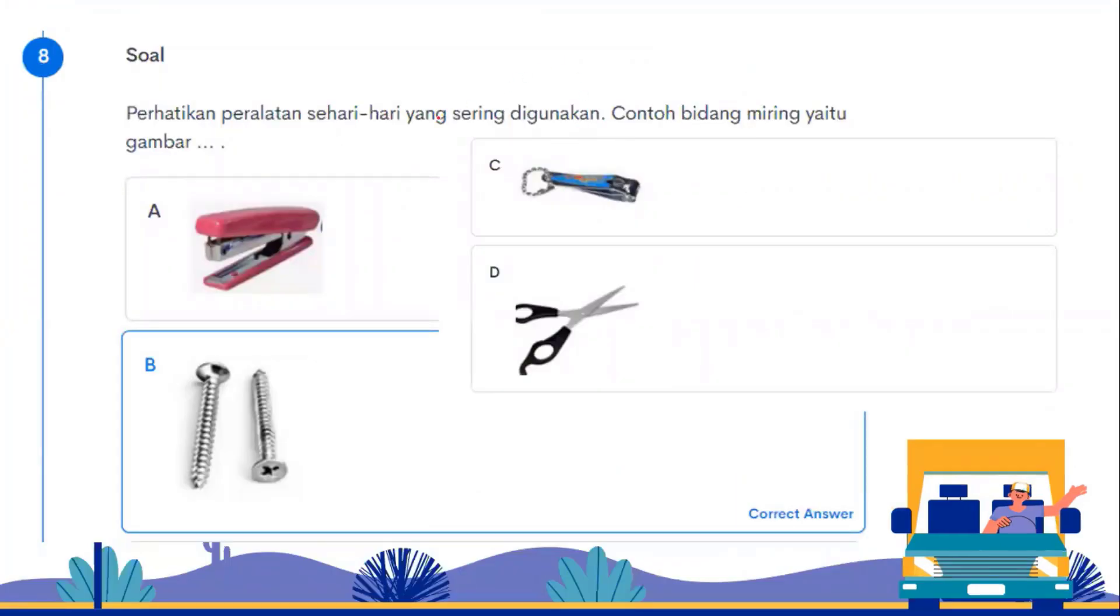Problem number 8 is conceptual. Pay attention to the following equipment that we often use in daily life. Inclined plane. This is a lever. This is also a lever. This one is also a lever. A lever is characterized by having a fulcrum point. Like scissors, the fulcrum is here. Then the fulcrum is here. Where is the fulcrum here? Here too, the fulcrum. But this one doesn't have it. This is shaped like a line, then it has threads. That's an inclined plane. So the answer is B.